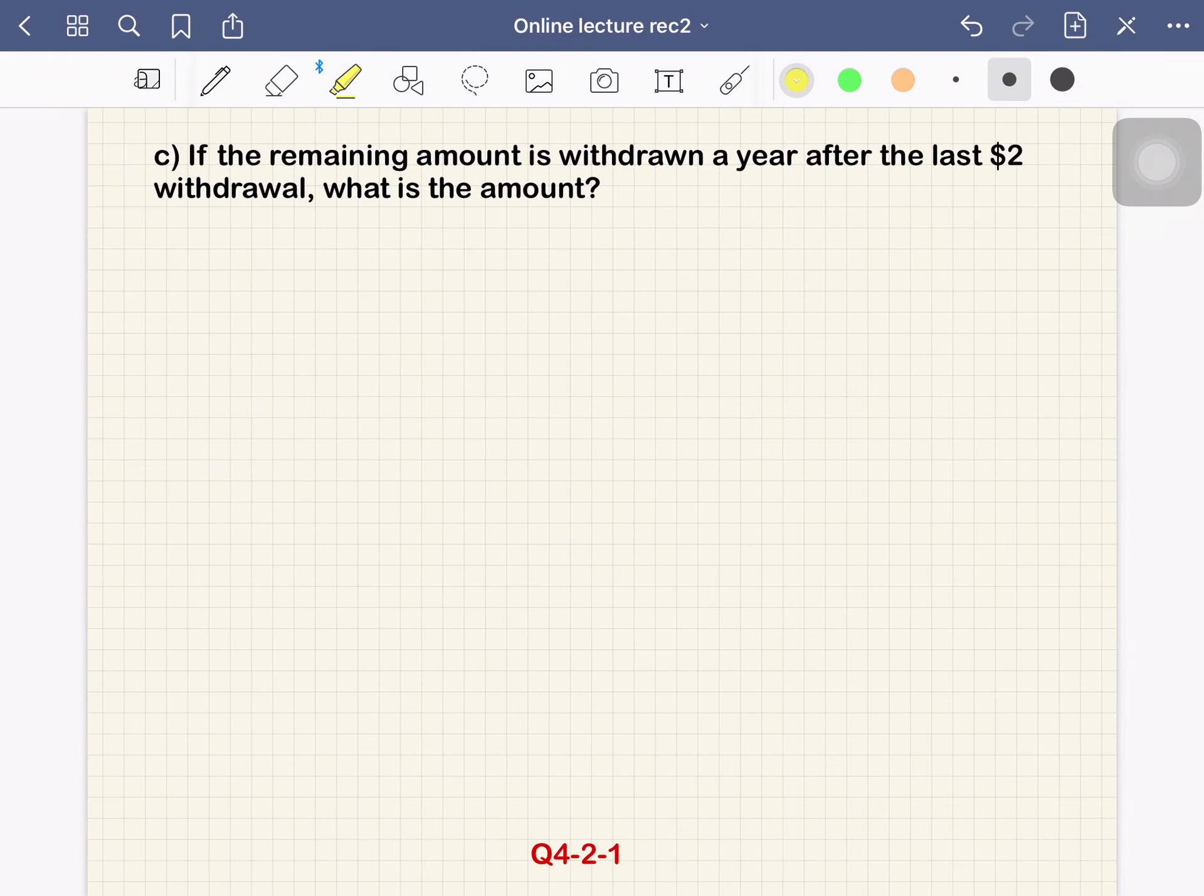Okay, so next question c: If the remaining amount is withdrawn a year after the last $2 withdrawal, what is the amount? So we have different ways of withdrawals. First seven payments are the same, so $2 each up to time 17. But we have some remaining balance at 17 and we withdraw that money at time 18.